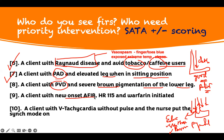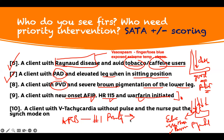A client with new onset atrial fibrillation (AFib), a heart rate of 115, and warfarin initiated. Think about it. When you have new onset AFib, what is the number one priority? My number one priority is rate control. They will ask you this question all the time because it tricks students and nurses. Number one priority is rate control — bring the rate down and control it. Then after that, you give anticoagulation. If I have new onset AFib and my heart rate is 115, bring it down first. Don't give me warfarin. Therefore, we need to see this patient.